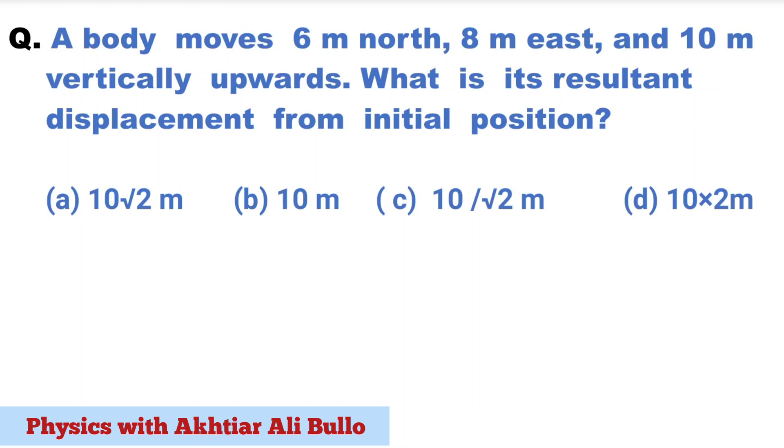A body moves 6 meters north, 8 meters east, and 10 meters vertically upwards. What is its resultant displacement from initial position? The options are: (a) 10√2 meters, (b) 10 meters, (c) 10/√2 meters, (d) 10×2 meters.